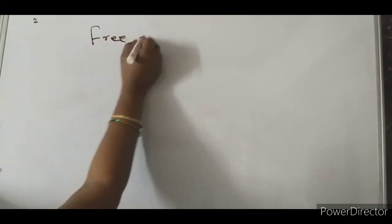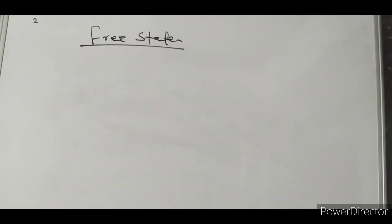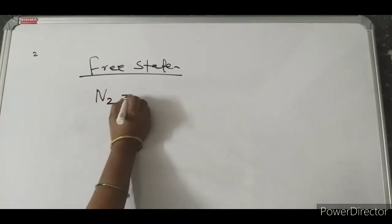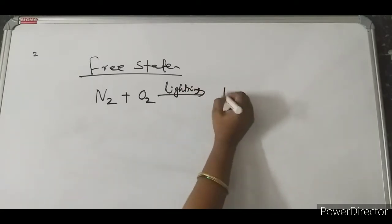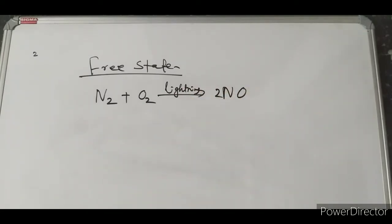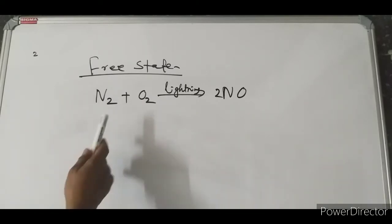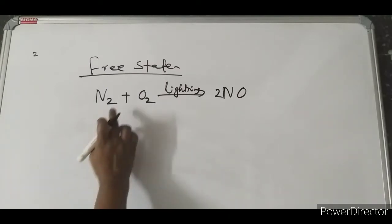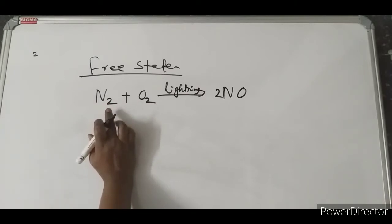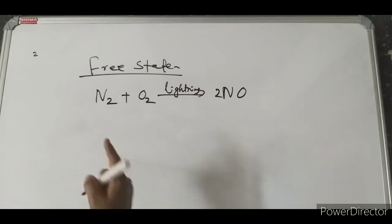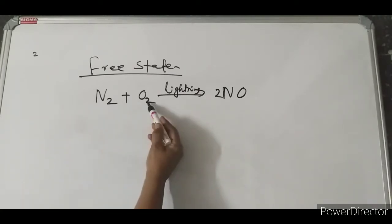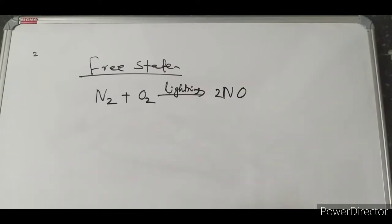HNO3 is present both in the free state and in the combined state. In the free state, during lightning conditions, atmospheric nitrogen reacts with oxygen to give rise to HNO3. Nitrogen is almost non-reactive under normal conditions, but under lightning conditions it reacts, similar to how nitrogen reacts under temperature, pressure, and catalyst in the Haber process to give ammonia.